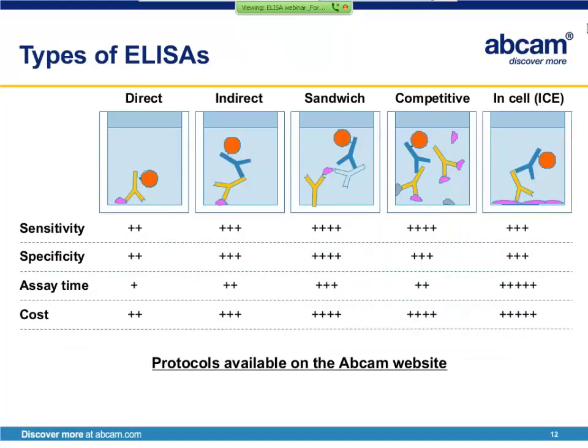All ELISA assays make use of the same basic principles. Here we'll compare five commonly used ELISA formats. The first is direct ELISA, which we just discussed. Moving along, we have the so-called indirect ELISA, because the target-specific antibody does not directly produce signal. Rather, the signal is provided by a secondary antibody bound to that primary antibody. The indirect ELISA is more sensitive than the direct ELISA, due to the multiple secondary antibodies which bind to each target-specific antibody, amplifying the signal.